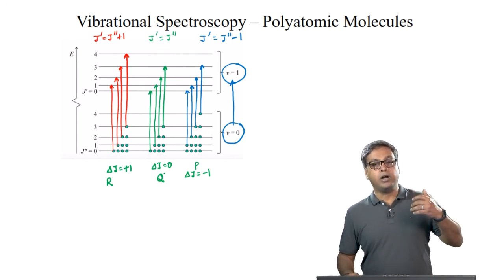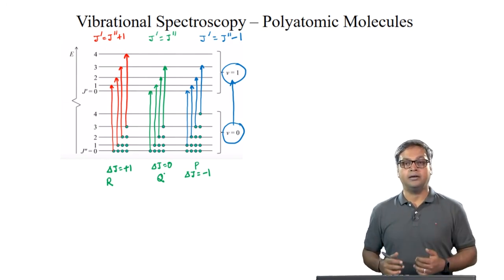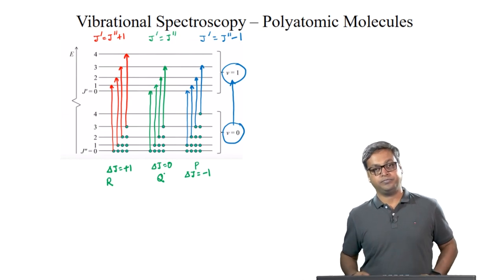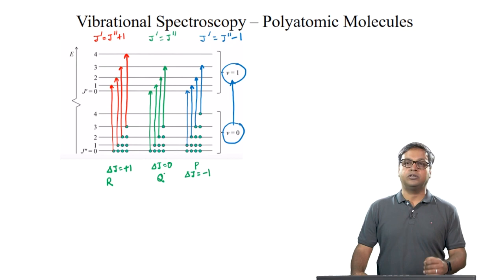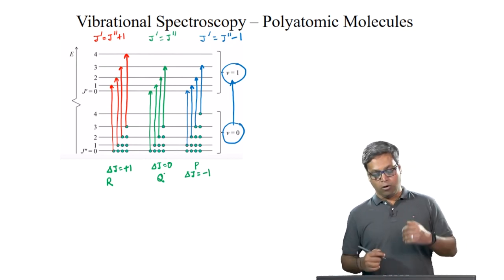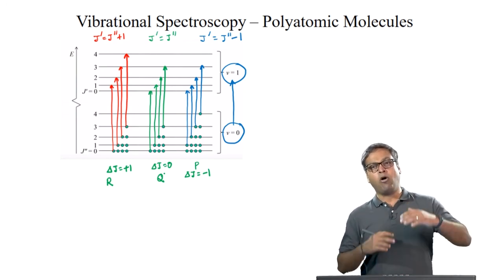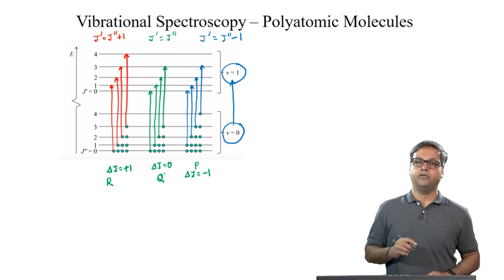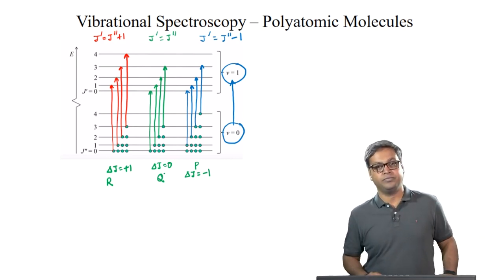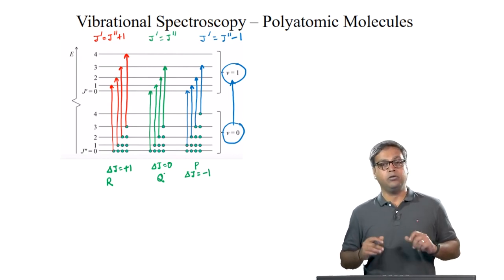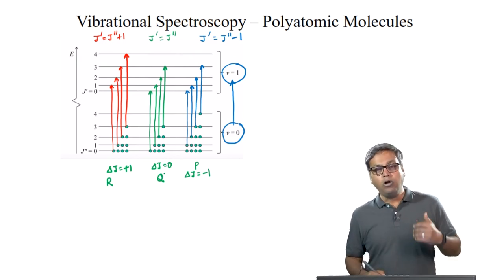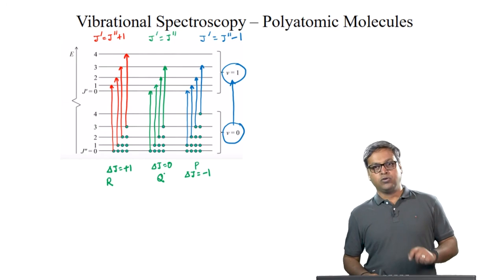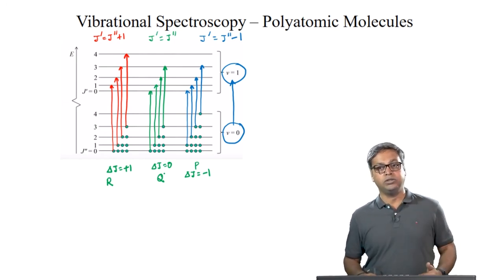If ΔJ = 0 — transitions from 0→0, 1→1, 2→2 — the energy gap will be almost the same for each, though slightly different because B0 differs slightly from B1 as discussed in an earlier lecture. Because of this, all lines associated with ΔJ = 0 will overlap with one another, and the central spike associated with the Q branch will be quite intense.